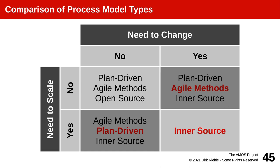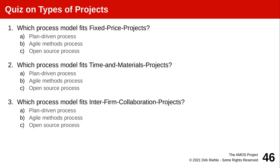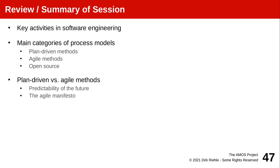We have now identified and discussed three different types of software development methods: plan-driven software development, agile methods, and inner source. Along two dimensions — how speedily you need to react to change and how quickly you need to scale — these methods have different strengths. Agile methods don't scale well but are good at reacting to change; plan-driven scales well but is slow to change; inner source and open source offer a good way of having both. In class, quiz questions will help identify which process works well for which type of project.